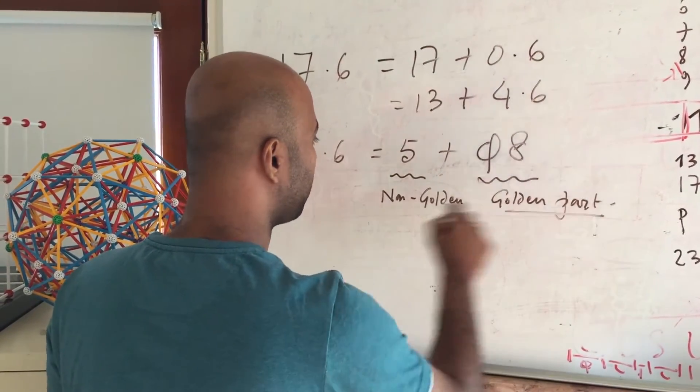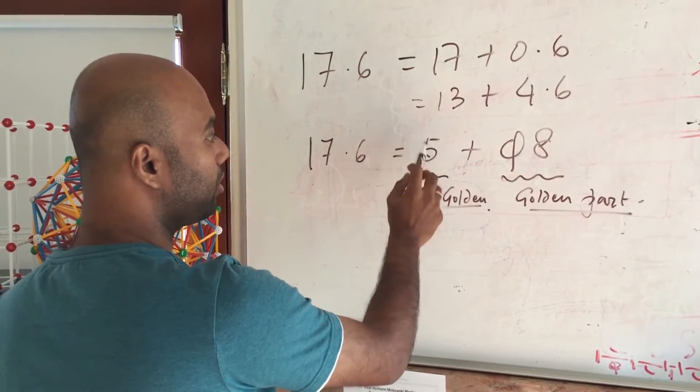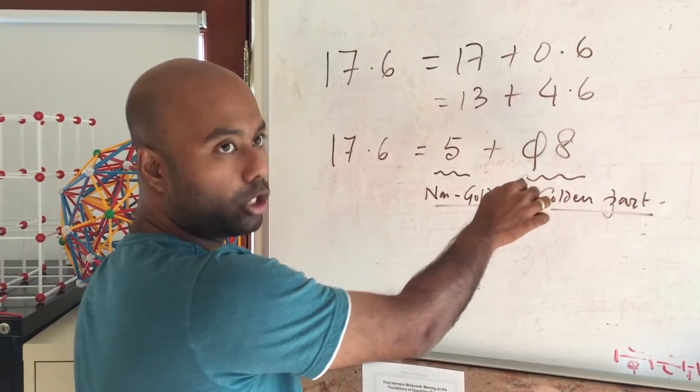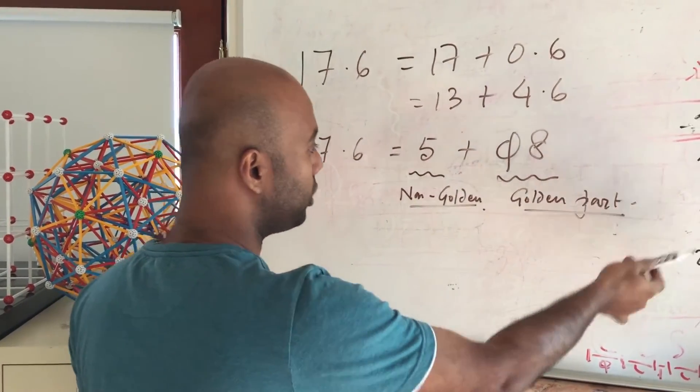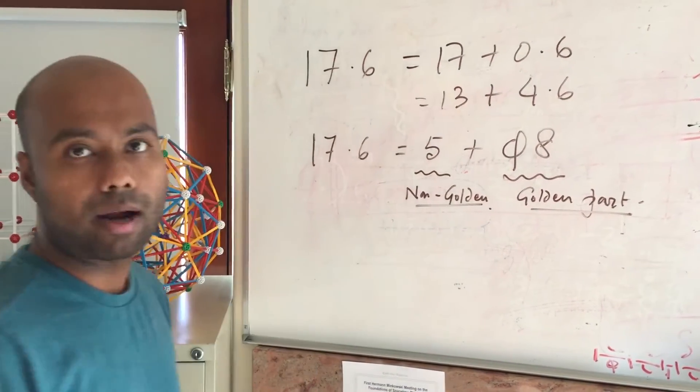When we talk about golden part and non-golden part, we are talking about the two components of this decomposition using the golden ratio, which is why we don't call it golden ratio part and non-golden ratio part, but just golden part and non-golden part.